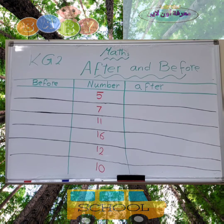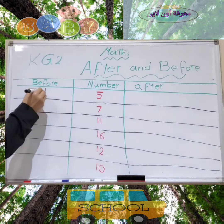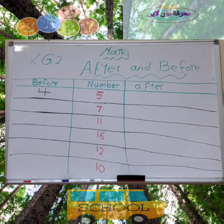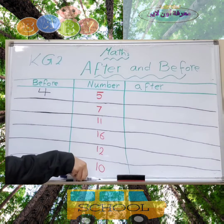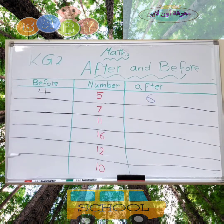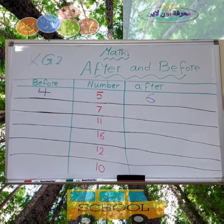We have number 5. What is the number before? Let's count back — before 5 we have 4. This is number 4. What is the number after? Let's count from 1: 1, 2, 3, 4, 5 and 6. The number after is number 6.